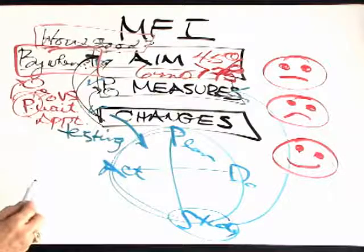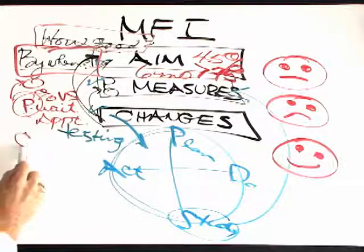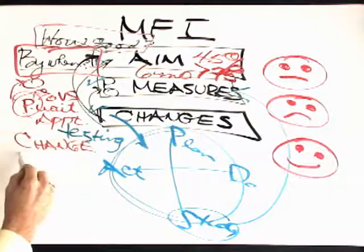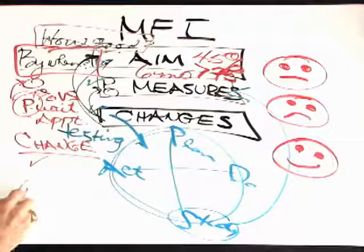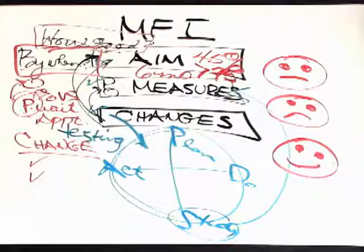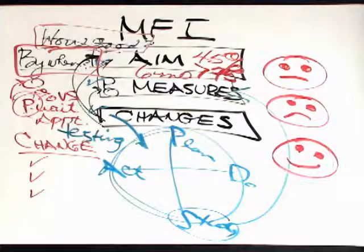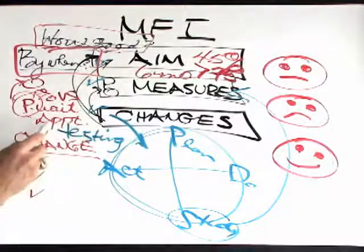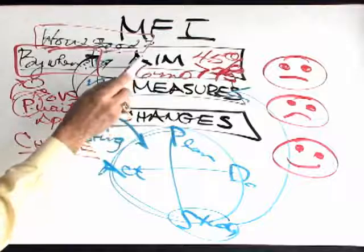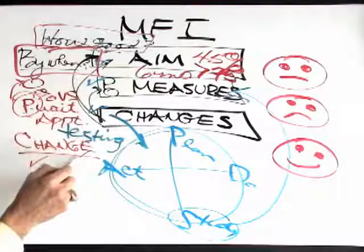Then what changes are we going to have? Well, the changes might be that we're going to have early pre-registration. That might be an idea. We might allow people to send in information via the internet or fax in their request, and we might have a tickler system where we call them back to remind them of their appointment. So now we've combined the three questions: our aim, our measures, and our change concepts.